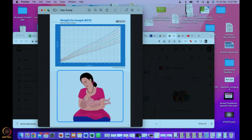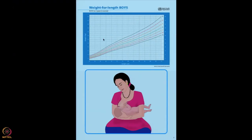Weight for length is always in Z-score — mean minus one, minus two, minus three, and mean plus one, plus two, plus three. You want to plot this at every visit to see if the baby anytime falls between minus two and minus three, or below minus three, because those babies are getting into acute malnutrition. You want to make sure of that.